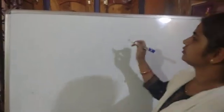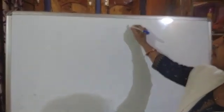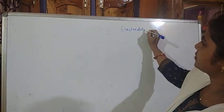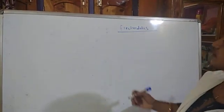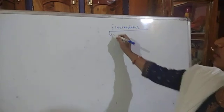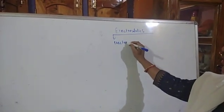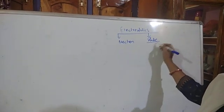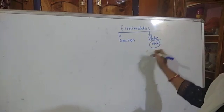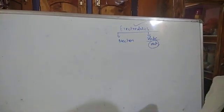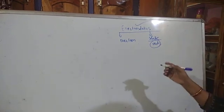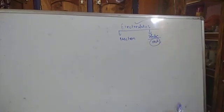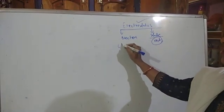Today we will start the first chapter of second year physics, that is electrostatics. Electrostatics consists of two words: one is 'electron' and another is 'static'. Electrostatics means electrons at rest. When the charge particle is at rest, that is electrostatics. In this topic we have to first study about charge.